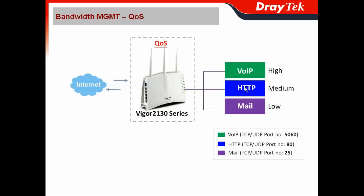Generally speaking, you would like to prioritize applications like Voice over IP, HTTP for web access, and mail. You want Voice over IP as the highest priority, followed by web access at medium priority, and mail at the lowest priority. With the Vega 2130 series, just a click is needed for QoS prioritization. You can use TCP/UDP port values — for example, VoIP port 5060, HTTP port 80, and mail port 25.